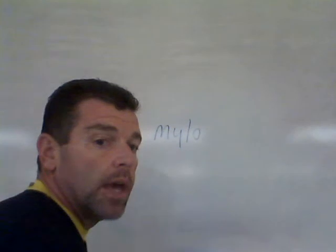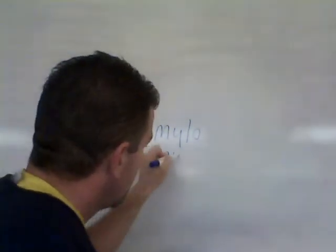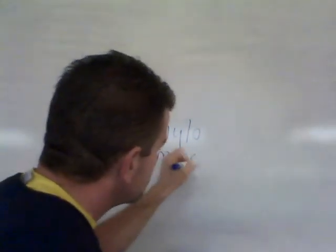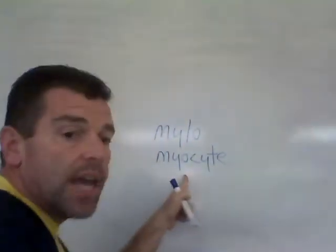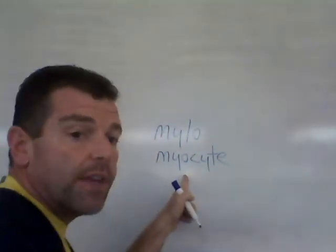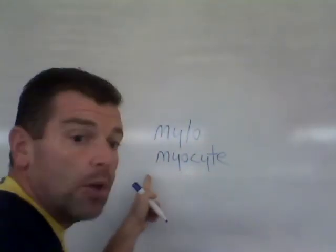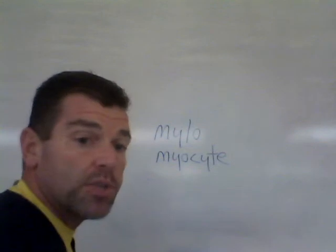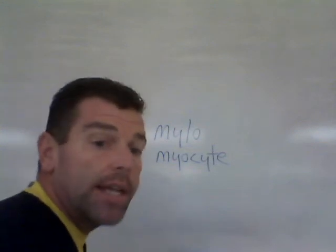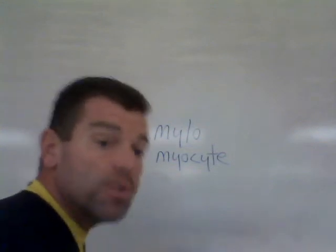'Myo' means muscle. A myocyte — we know 'site' is a suffix meaning cell — so myo means muscle and a myocyte is a muscle cell.